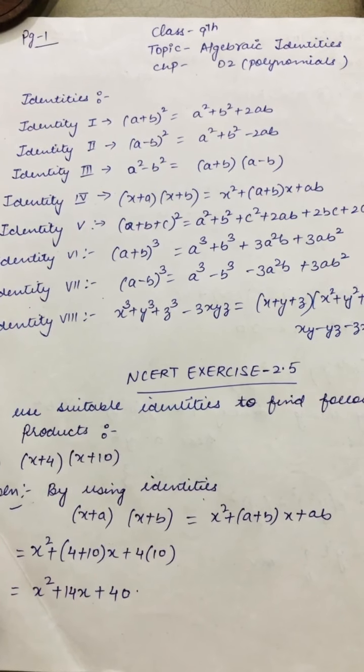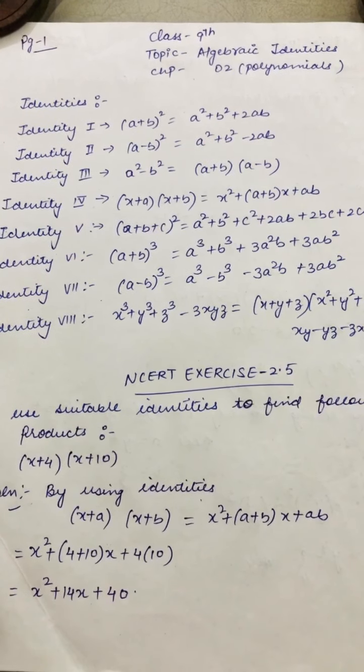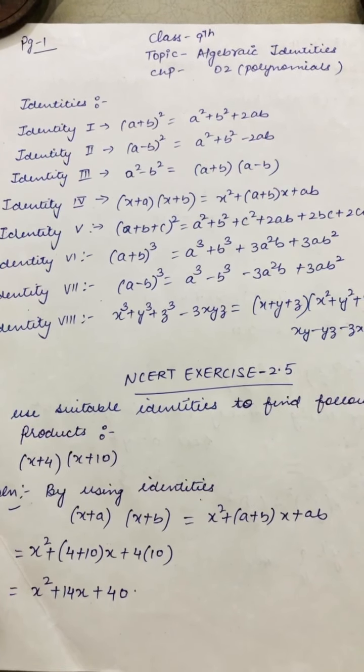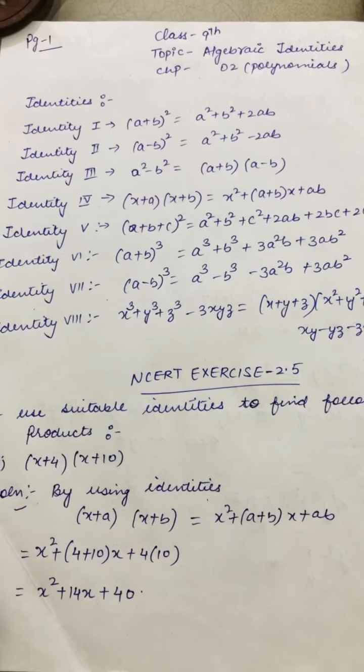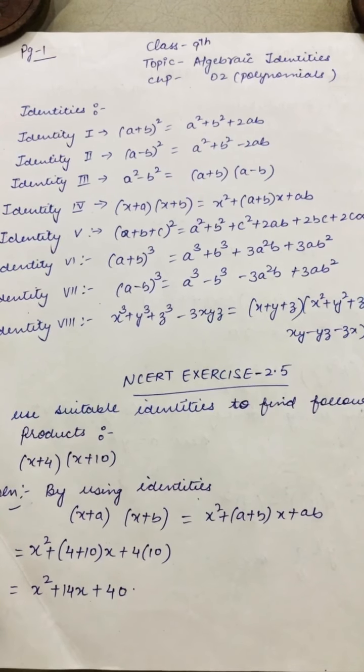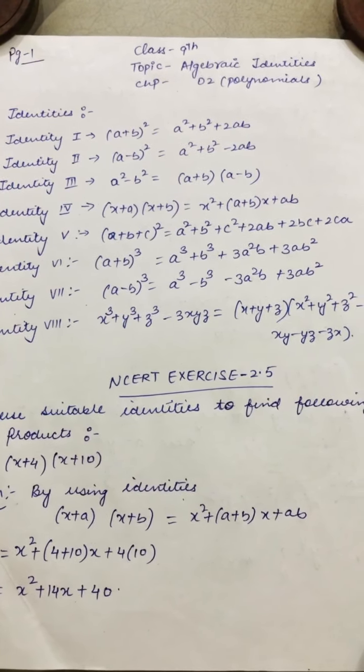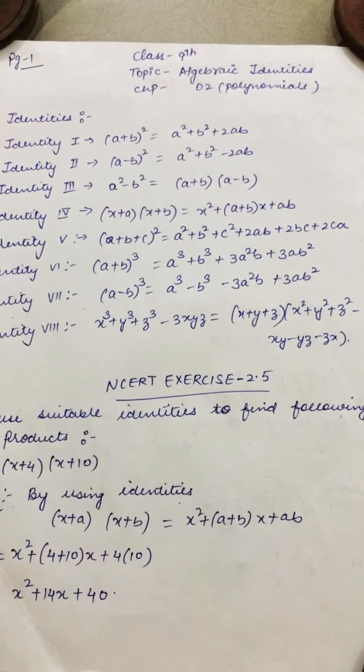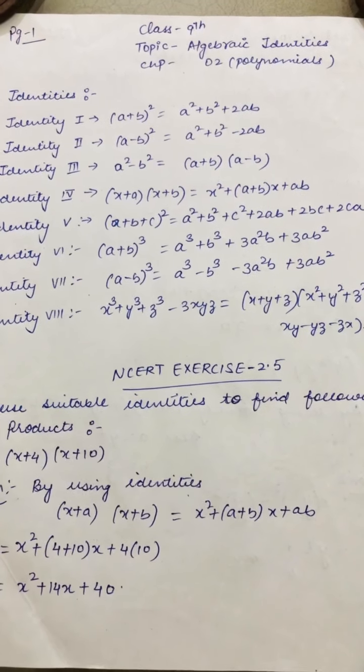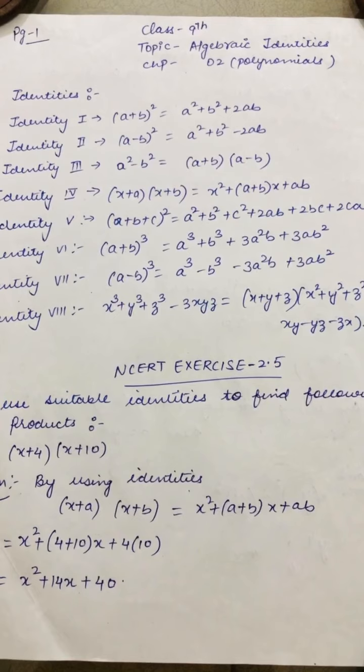Identity number 4: (x+a)(x+b), where x is common here, equals x² + (a+b)x + ab. Identity number 5: (a+b+c)² = a² + b² + c² + 2ab + 2bc + 2ca. Don't say A2, B2, no, this is wrong. Say a square, b square.